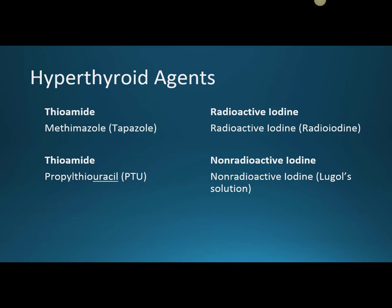Our thioamides can be broken down into two different drugs. We have methimazole, with the brand name Tapazole, and then we also have propylthiouracil, which is commonly abbreviated as PTU. Our two types of iodine are radioactive iodine, commonly referred to as radioiodine, and non-radioactive iodine, commonly referred to as Lugol's solution.